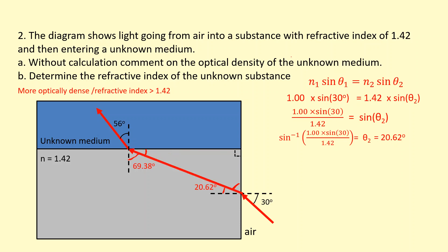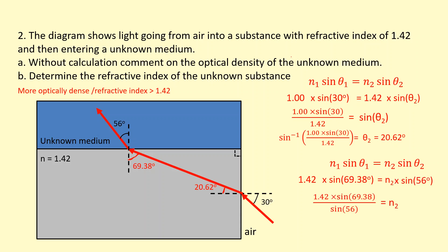Once we have that angle, we apply Snell's law at the second boundary. N1 is the gray medium, so 1.42, and the angle of incidence is 69.38 degrees. N2 is the unknown medium and sine theta 2 uses the angle of refraction of 56 degrees. Rearranging and solving, we get a refractive index of 1.62, which makes sense because we're going into a more dense medium and the light bends towards the normal.